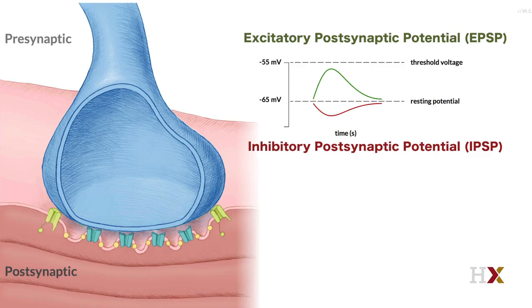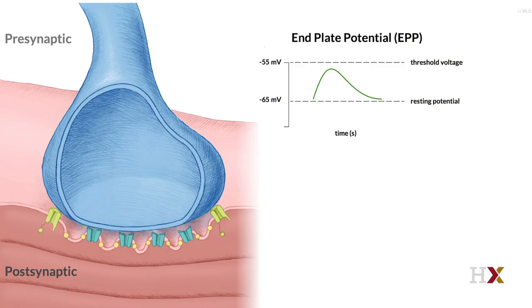The nerves touching the muscle fibers form flat structures called endplates, and the potentials recorded here are called endplate potentials, or EPPs.